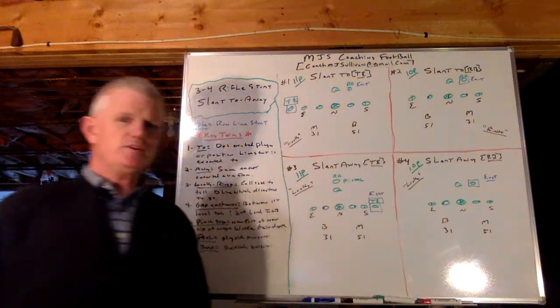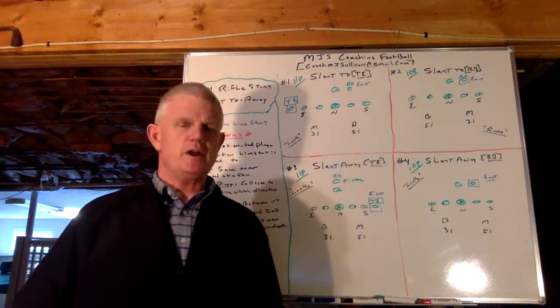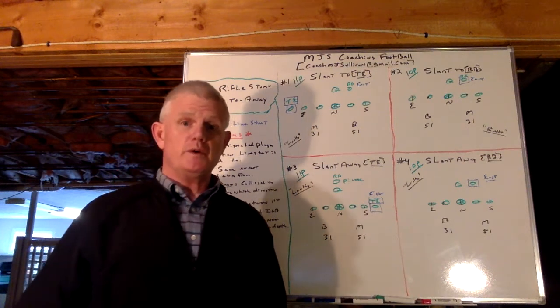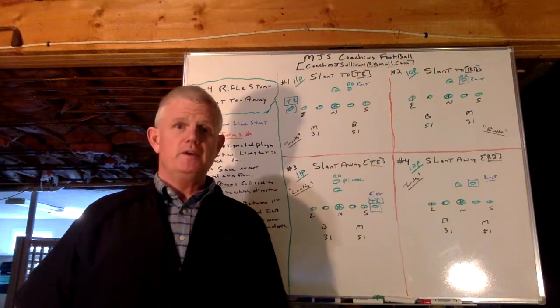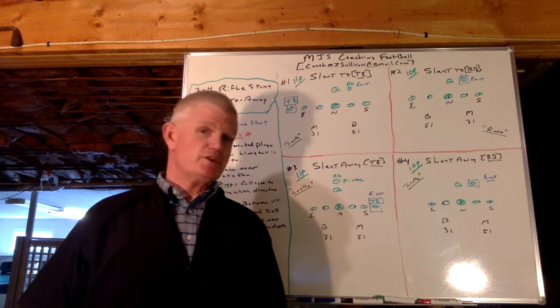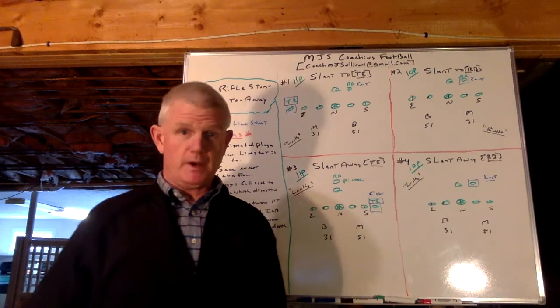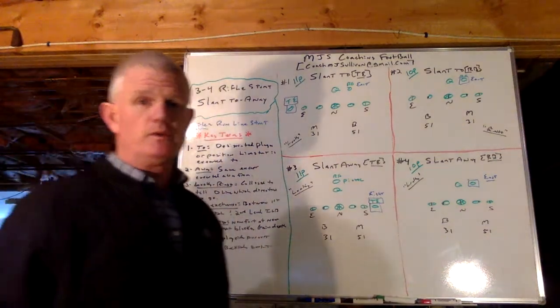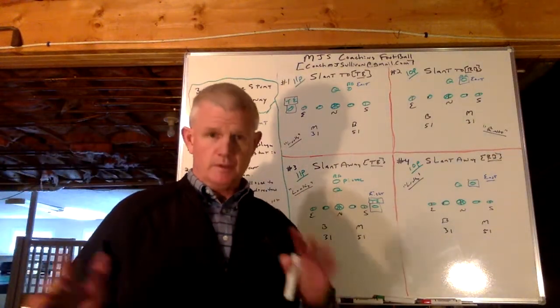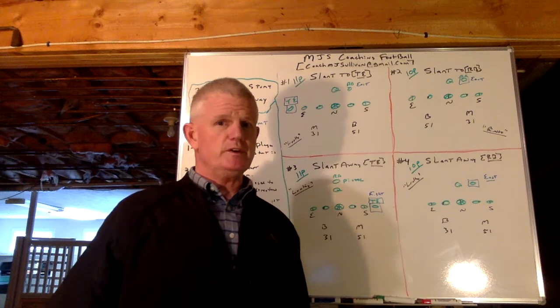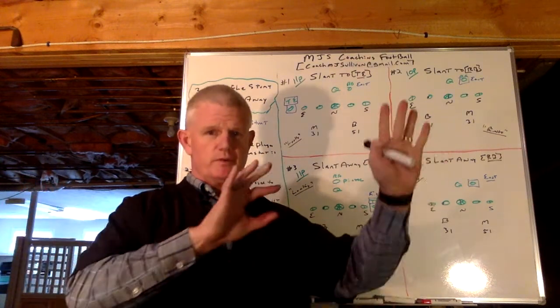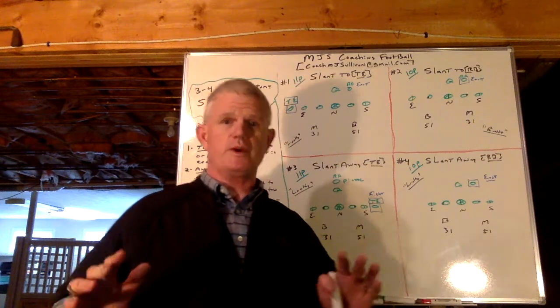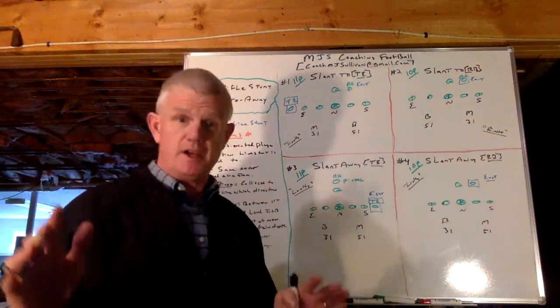Today in this presentation I want to share with you one of what we call our rifles. It's a rifle stunt, and actually it's two. It's slant to or slant away. So first of all, if you go to my rifle on the whiteboard playlist, you'll see others. This certainly is not the only one, but there's a definite reason why we would choose to run slant, and once I go through it I can give you that as we get near the end.